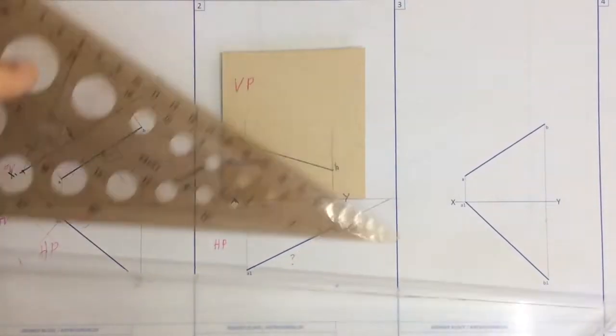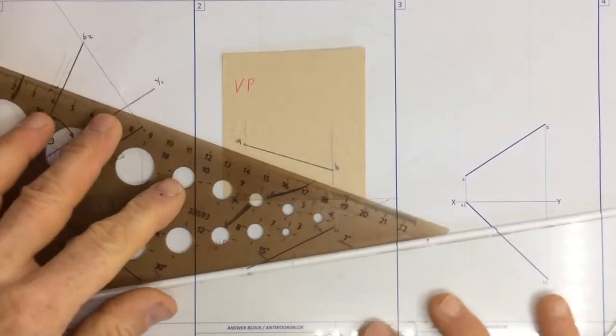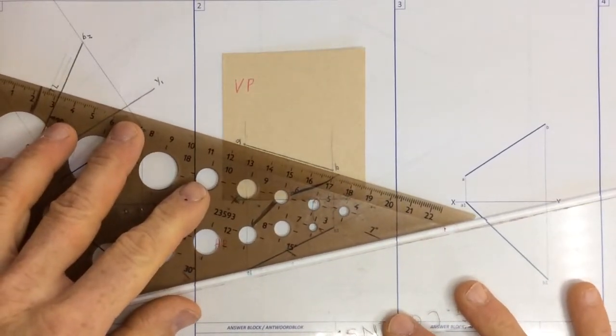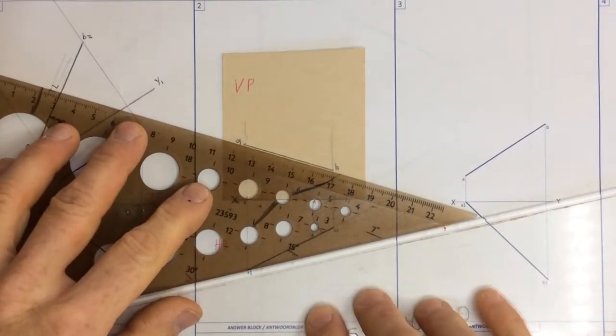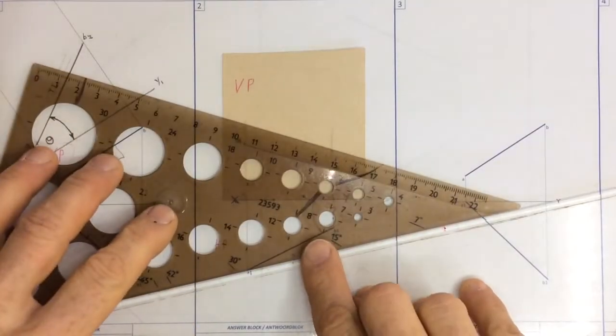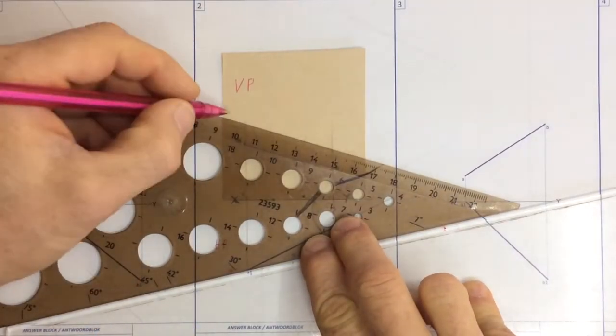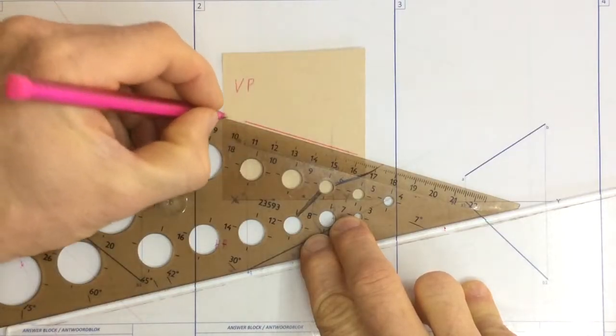Let's start. I'm going to take my set square. I'm going to place my set square in line with AB over there. I'm going to slide it out and I'm going to draw in an XY-axis.